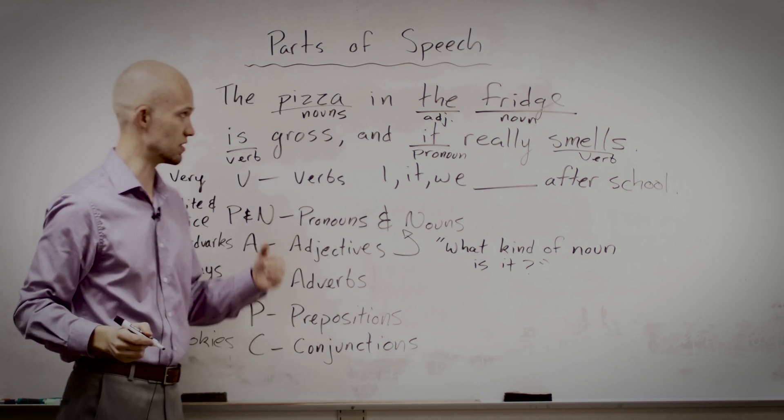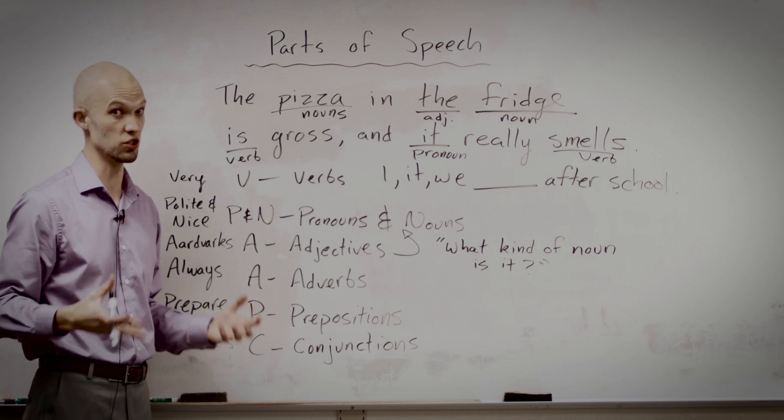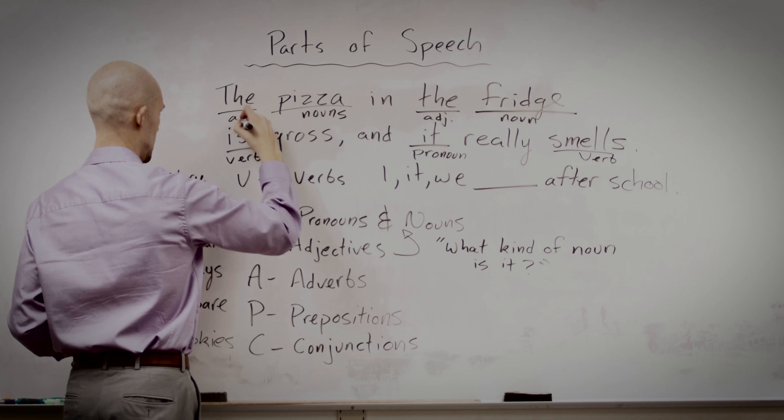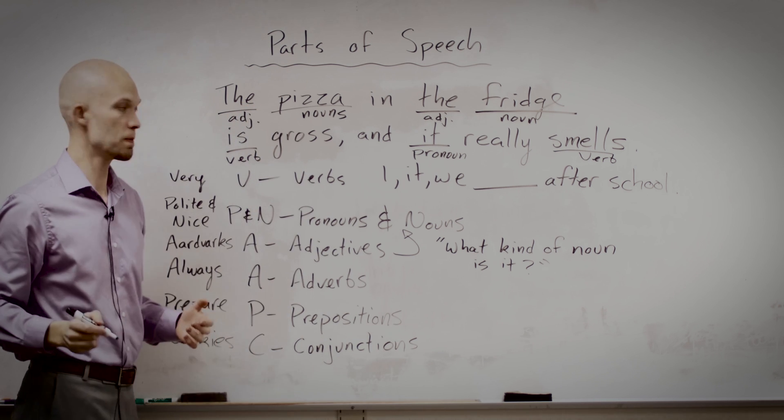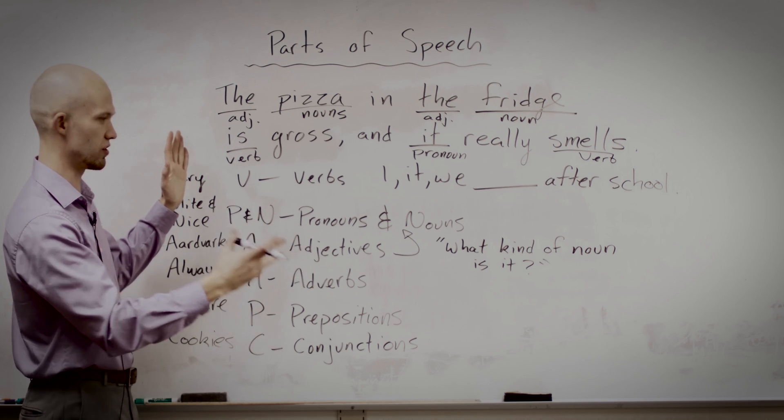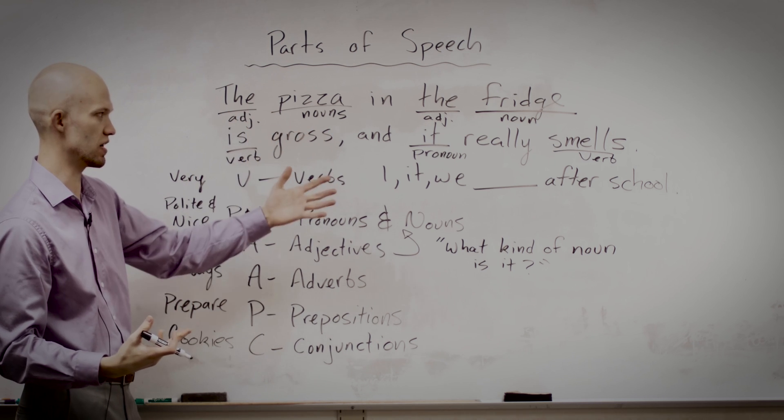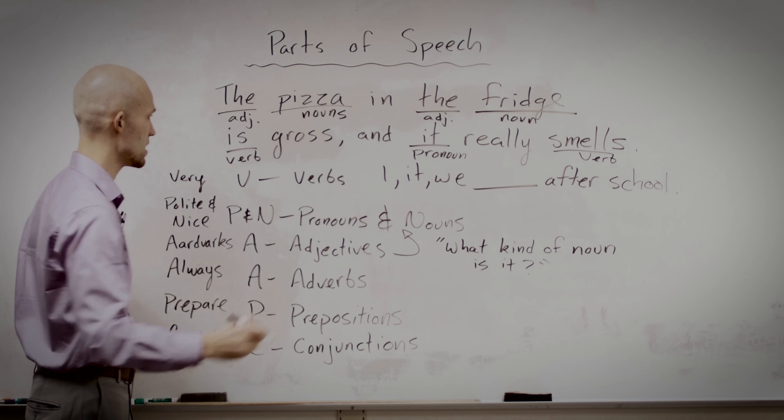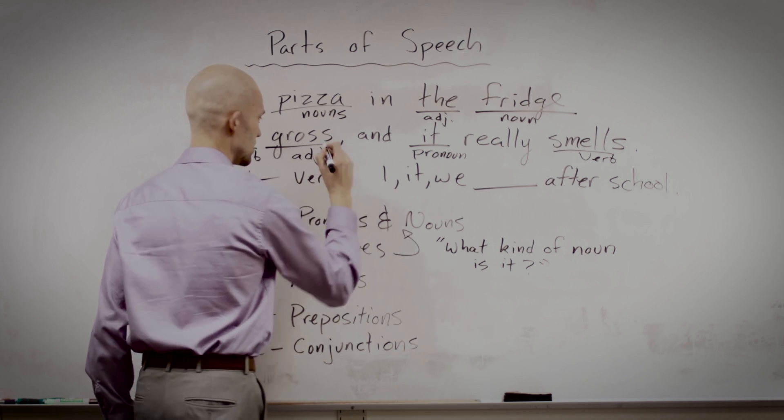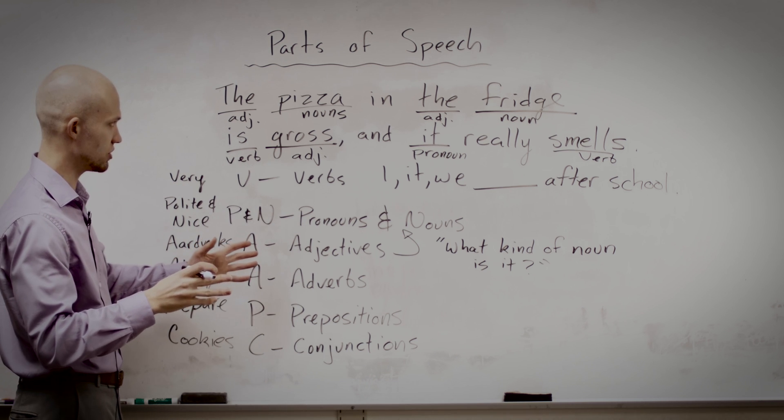So the word the is an adjective. As opposed to any old fridge, it's the fridge. The one that we both know about. Likewise, this the is an adjective. Okay. So are there any others? Are there any other words in this sentence that tell you what kind of pizza or fridge or it? And you should identify one. Gross. What kind of a pizza is it? It's a gross pizza. All right.